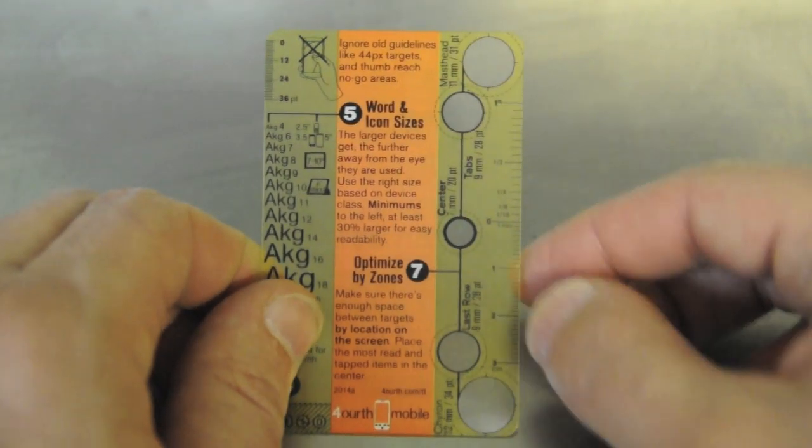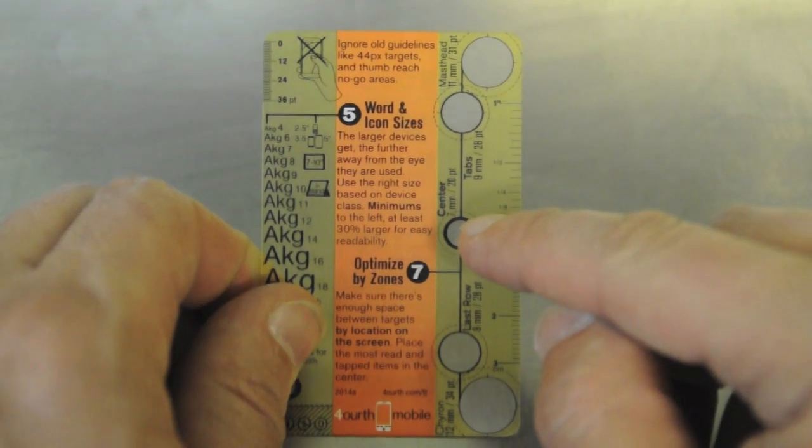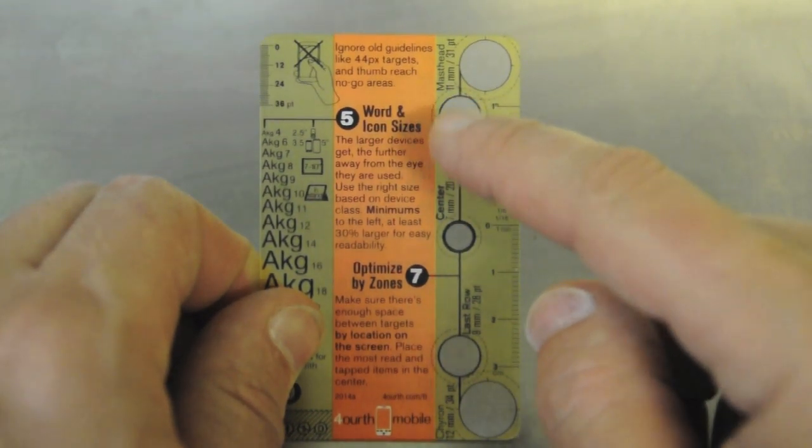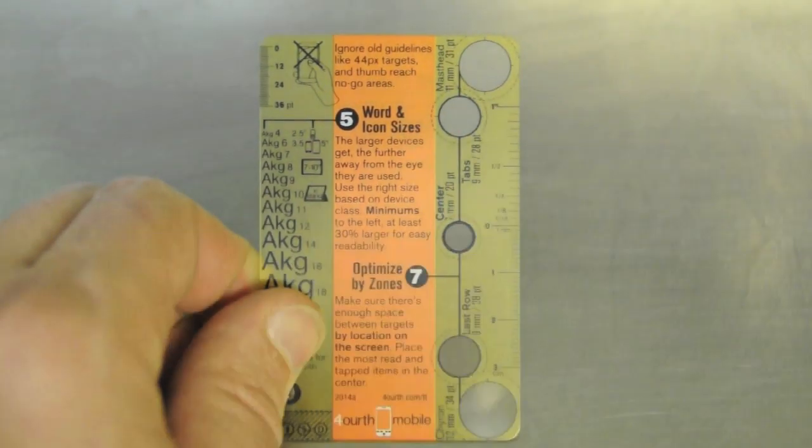I mentioned touch accuracy before, but this tells you that people are most accurate in the center, less accurate as they get towards the edges, and just horrible around the sides.